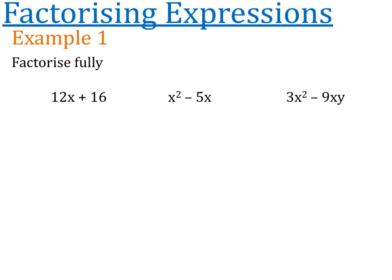Example one says factorize fully. This word fully is really, really important - it lets us know that we need to take out the highest common factor when we factorize. So for instance, I'm looking at 12 and 16, seeing what they have in common. They're both even, so they have two in common, but they both also have four in common. If I only took out a two, I wouldn't be factorizing fully, because four is the highest common factor of 12 and 16.